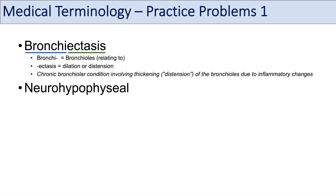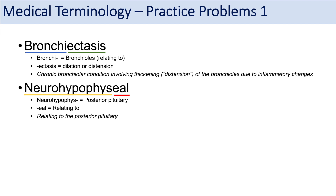The next term is neurohypophyseal. The prefix neurohypophysis means the posterior pituitary. Hypophys means pituitary, and neuro indicates it is the posterior pituitary where neurons from the hypothalamus lead in. The suffix -eal means relating to. So neurohypophyseal means relating to the posterior pituitary gland — you might hear about the neurohypophyseal portal system or neurohypophyseal tract, both relating to the posterior pituitary gland.